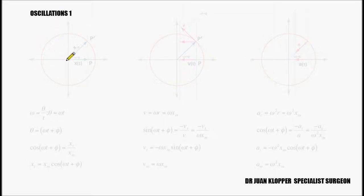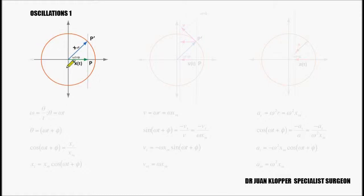In this first video on oscillations, I want to derive the three equations that we have for simple harmonic motion: namely the displacement, the velocity, and the acceleration for simple harmonic motion. We can derive these by just looking at these figures here and describing simple harmonic motion as uniform circular motion, but with the important note that there is constant angular velocity.